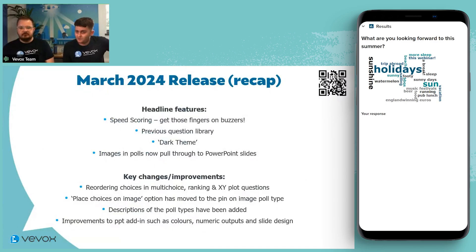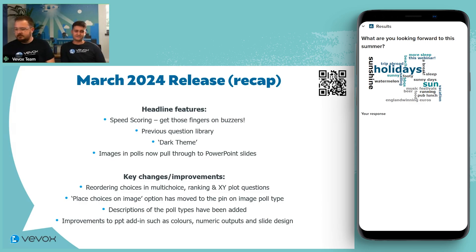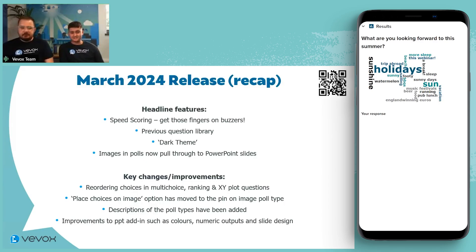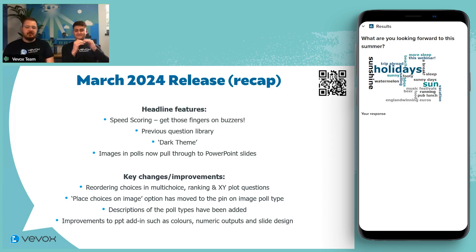March 2024 release recap. Speed scoring — fastest finger first. An example of this would be if you've had a tie for first place at the top of the leaderboard and you want to find out who the winner was. The speed scoring option lets you figure that out — the person who answered the fastest would be the winner.